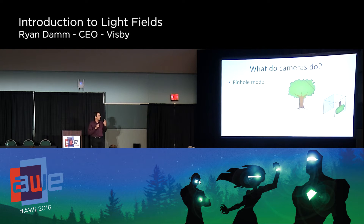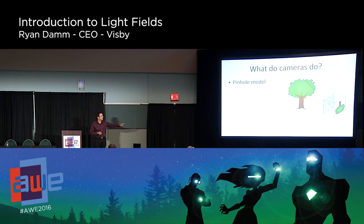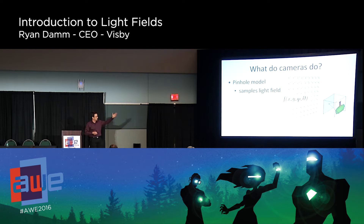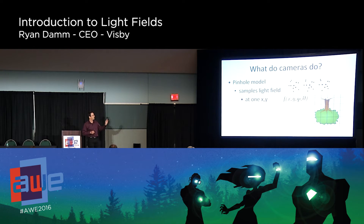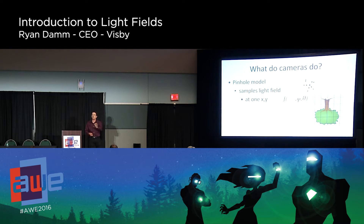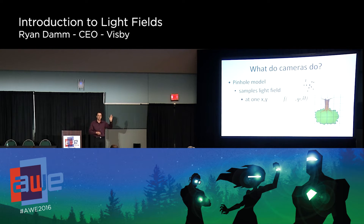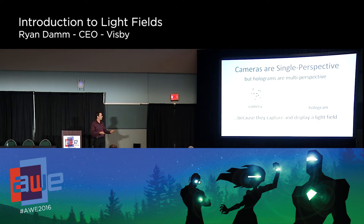To understand how to capture light fields properly, let's think about what a real camera does. Our eyes are sampling a light field, and so do cameras — but cameras sample it at a single spot, a single pinhole. A camera is only sampling the light field at a single perspective, defined by your position in 3D space. Therefore, a camera only has a single perspective, which is why it produces a two-dimensional image — two dimensions of angular, and that's it. That's really not quite enough for producing light fields.